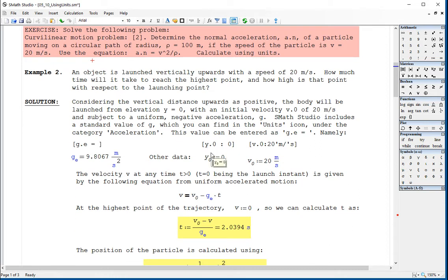Okay, we have an object that is launched vertically upwards. For the next problem, we have an object that is launched vertically upwards with a speed of 20 meters per second initial speed. How much time will it take to reach the highest point? So we type here in text, t equals what? And how high is that point? Let's say that would be a position.